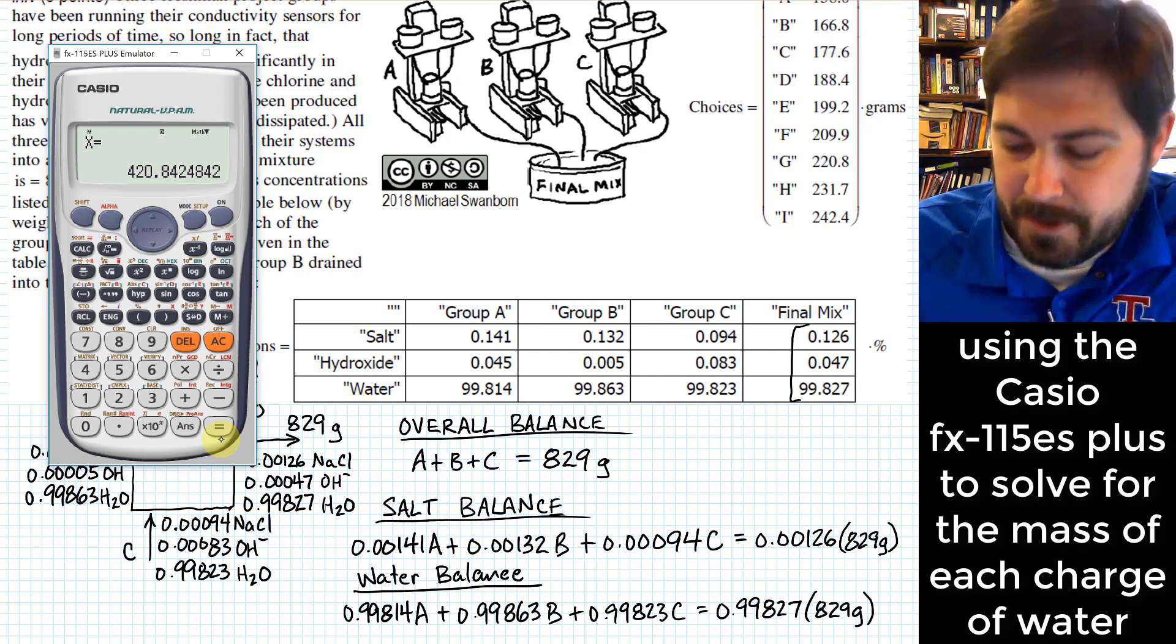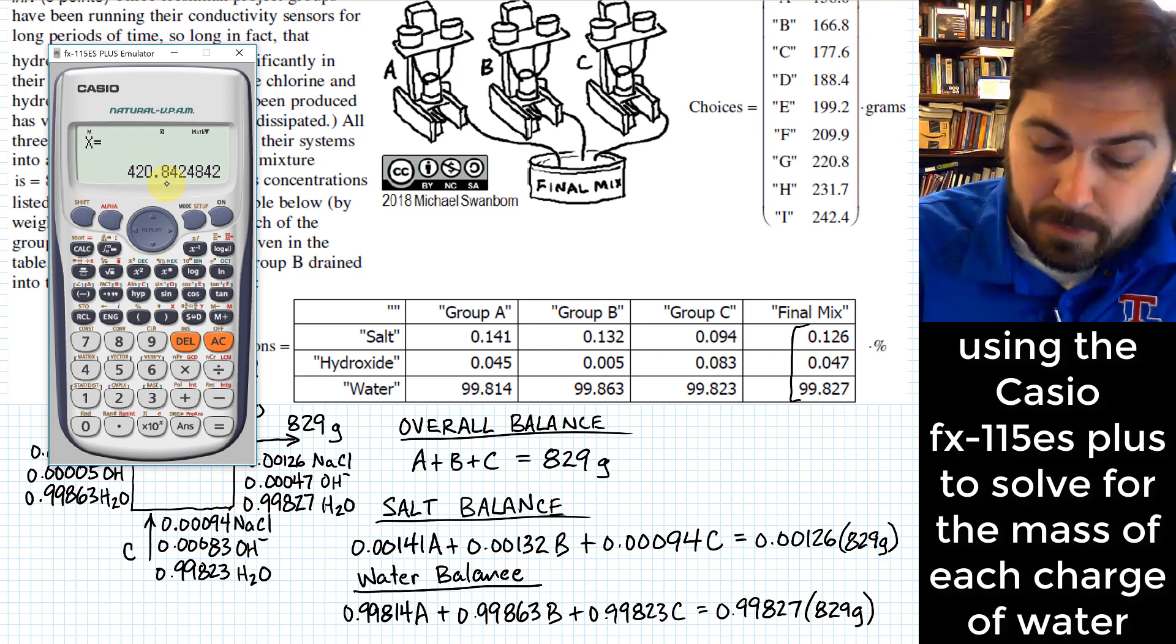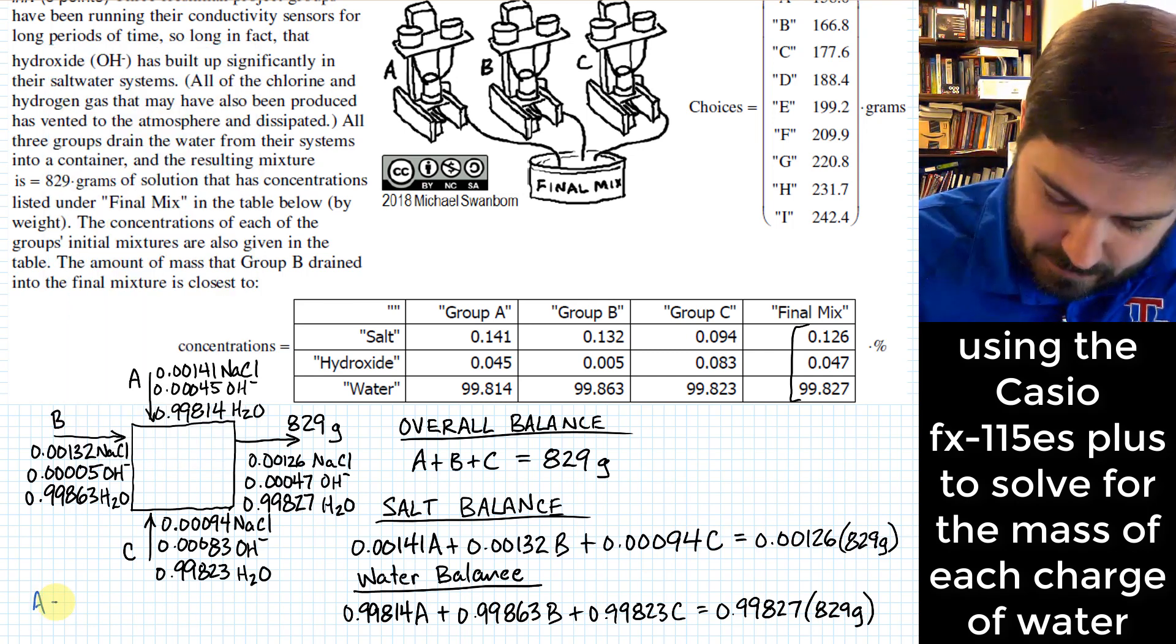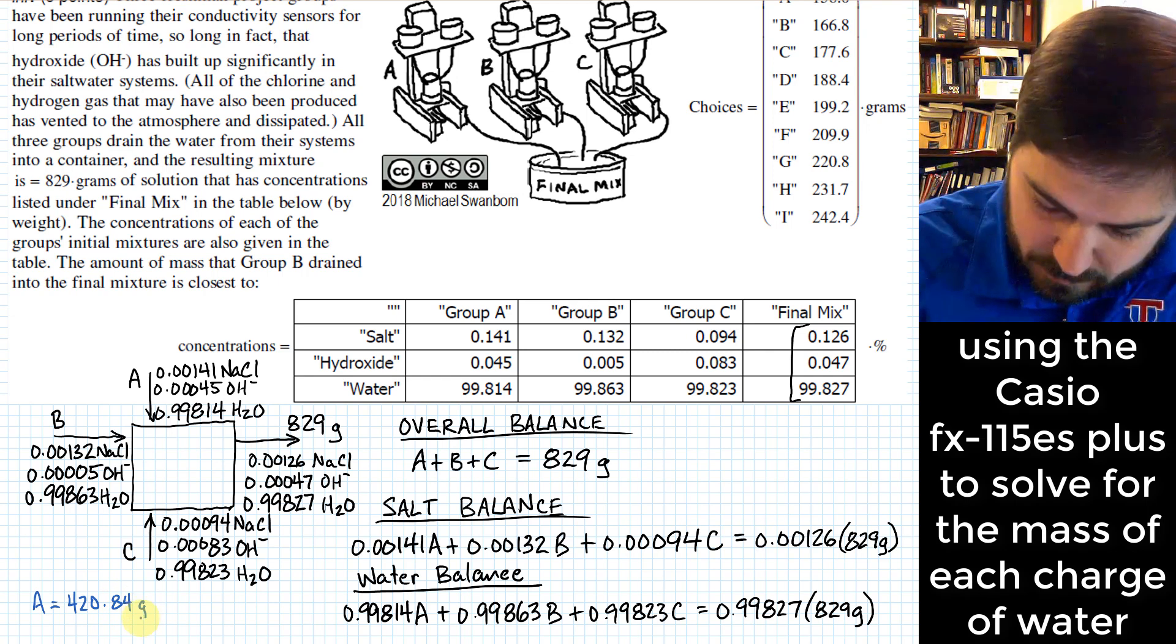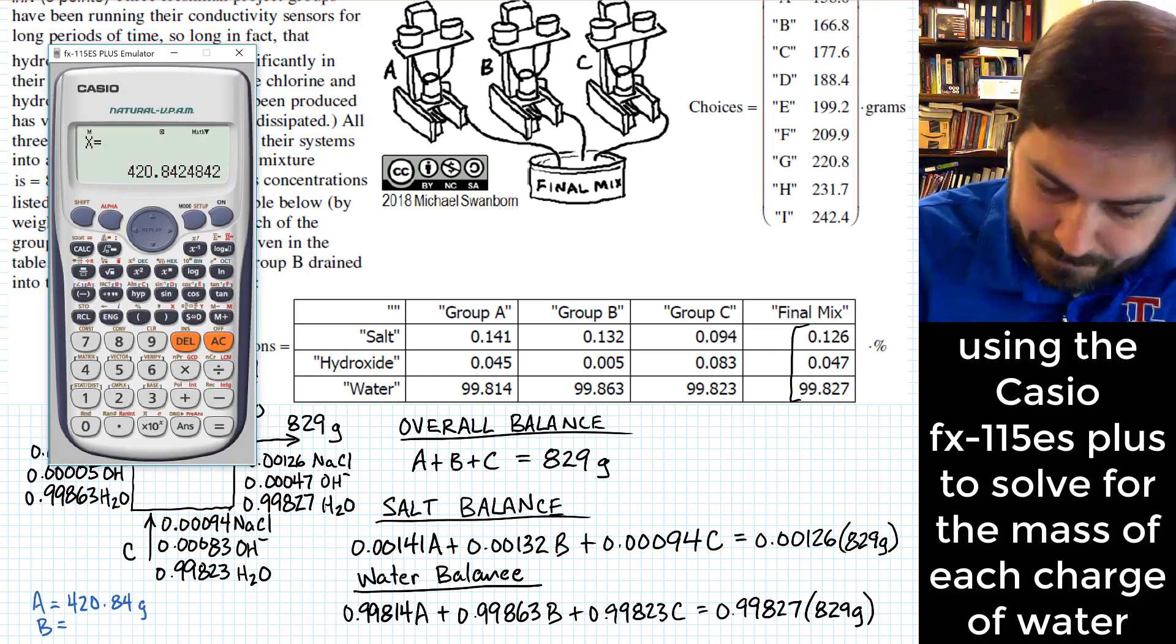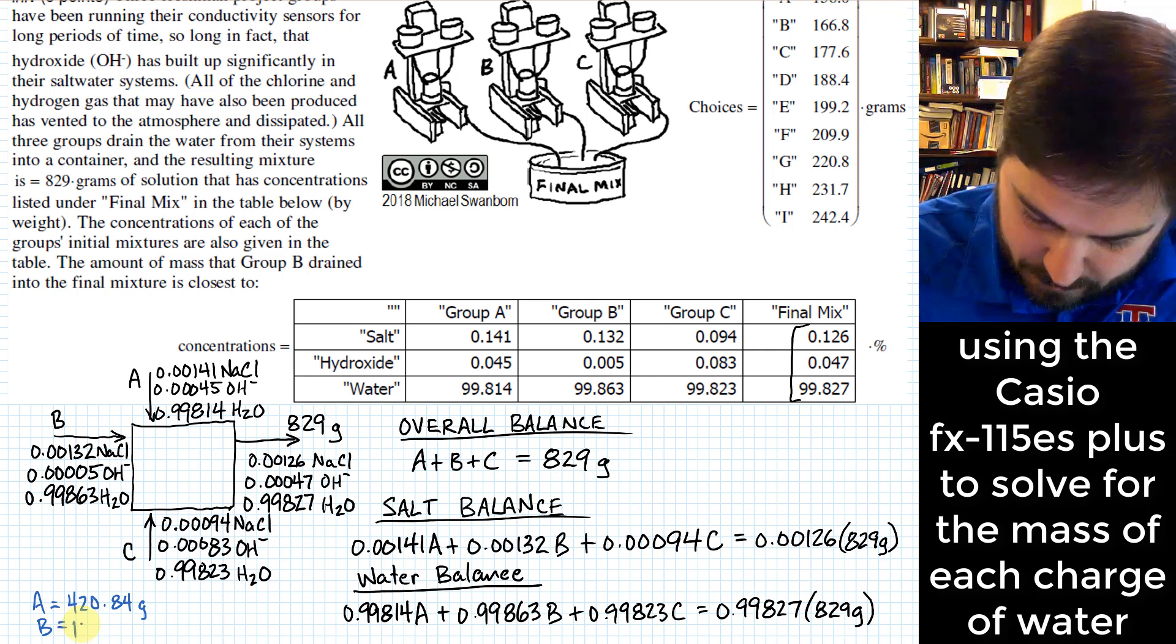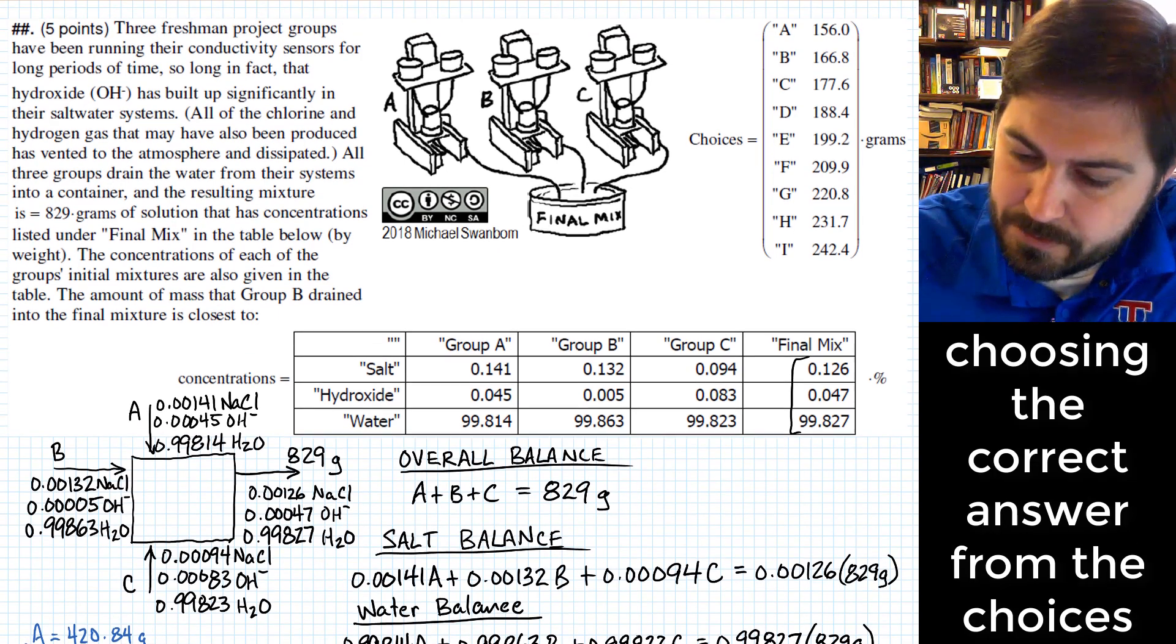So when we filled up the matrix full of values, we just hit equals. And it will give us each of the A, B, and C terms in the order that we put the coefficients in. So that first value is going to be corresponding to the value of A, and that will be 820.84 grams. So I'll just write these over here, A is equal to 420.84 grams. What we really want is this B term. Because that's what the problem asked us for. 177.59. I'm going to put a box around that one, because that is ultimately what we want to choose from up here.